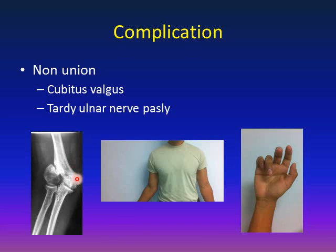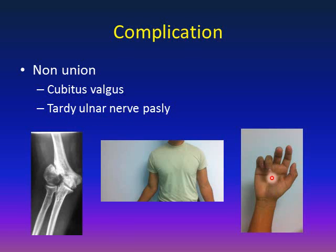Because the ulnar nerve is on the medial side of the elbow, cubitus valgus deformity causes a stretch of this nerve, leading to tardy ulnar nerve palsy. The patient shown is unable to extend the fourth and fifth fingers due to ulnar nerve palsy, resulting in a partial claw hand deformity.